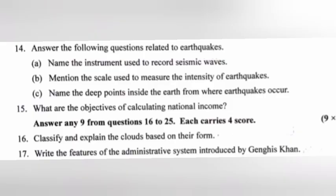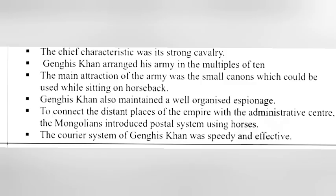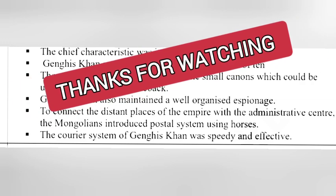Question 17: Write the features of the administrative system introduced by Genghis Khan. Answer: The chief characteristic was its strong cavalry. Genghis Khan arranged his army in multiples of ten. The main attraction was small cannons which could be used while sitting on horseback. Genghis Khan also maintained a well-organized espionage system. To connect distant places of the empire with the administrative center, the Mongolians introduced a postal system using horses. The courier system of Genghis Khan was speedy and effective.